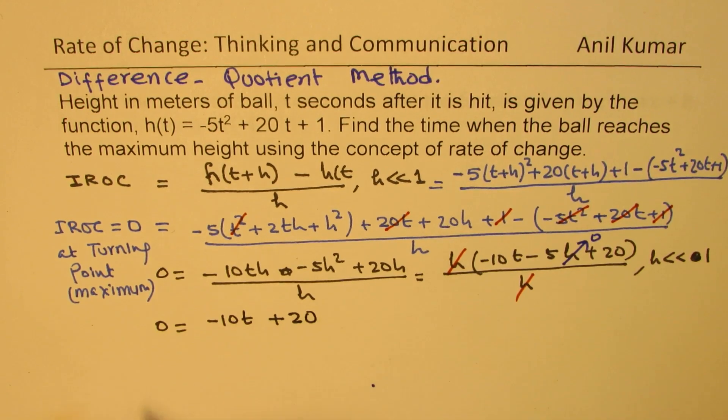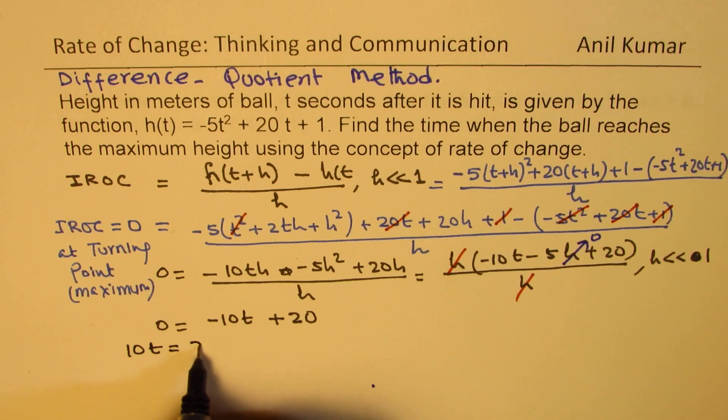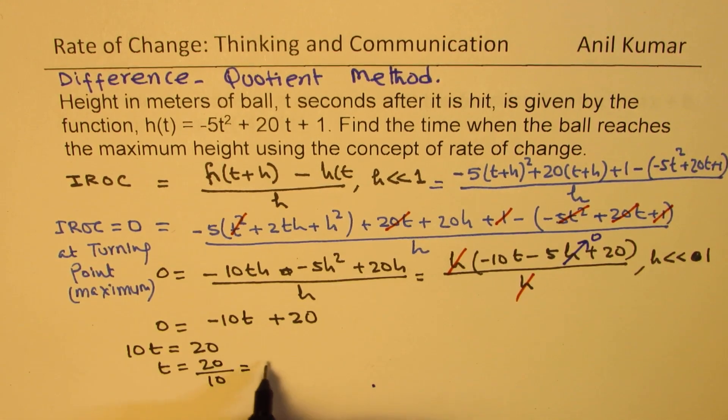So what we get here is that 0 is equal to minus 10t plus 20. So bringing 10t on this side, we get 10t equals to 20, or t equals to 20 over 10, which is 2, right?